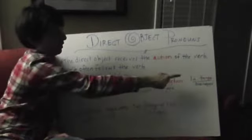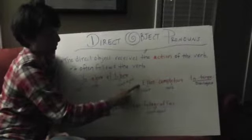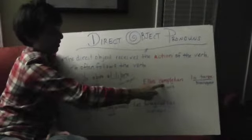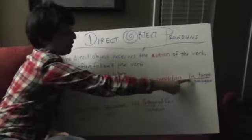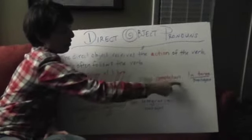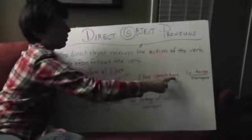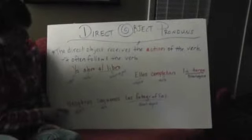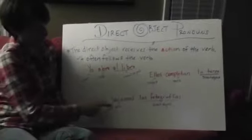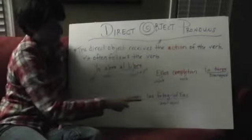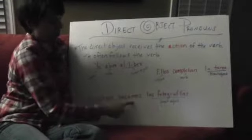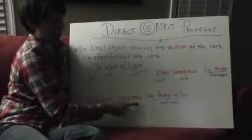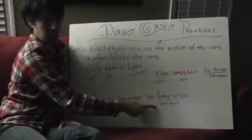Otro ejemplo: ellos completan la tarea. Ellos es el sujeto, completan es el verbo, y la tarea es el direct object. La tarea receives the verb, which is to complete. What do I complete? The homework. And another example, número tres: nosotros sacamos las fotografías — we take the pictures. What do we take? The pictures. The pictures are my direct object.